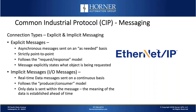The two most common connection and messaging types in CIP are explicit messages and implicit messages. Explicit messages are asynchronous in nature — they're only sent on an as-needed basis, such as tuning parameters for a PID loop. They're strictly point-to-point, one to one, and follow the request-and-response model. They're called explicit messages because the message itself explicitly states the object and service being requested — all that information is contained in the message when the request is made.